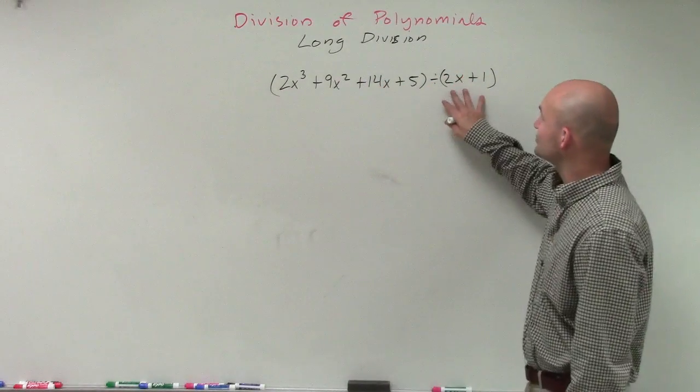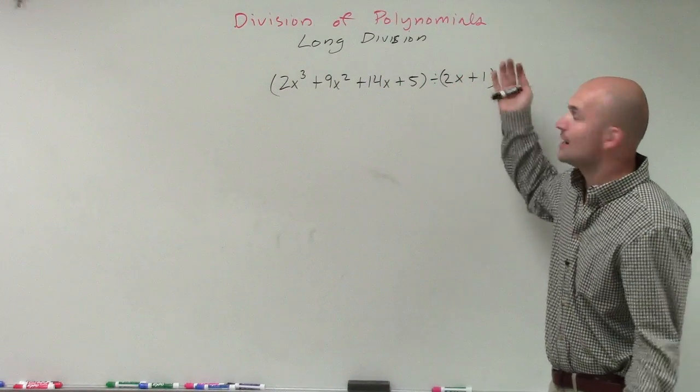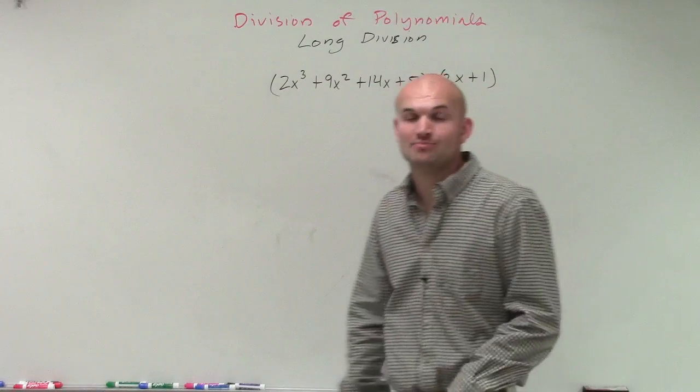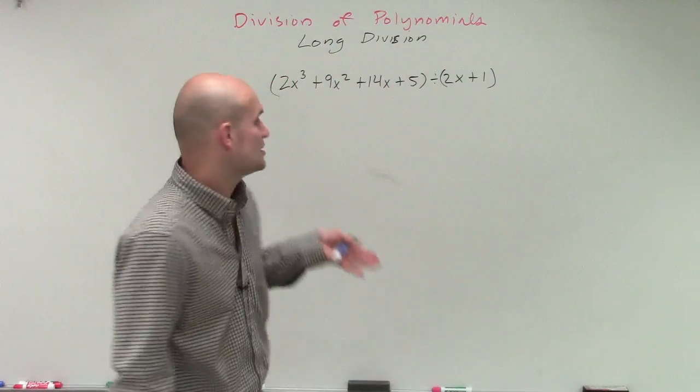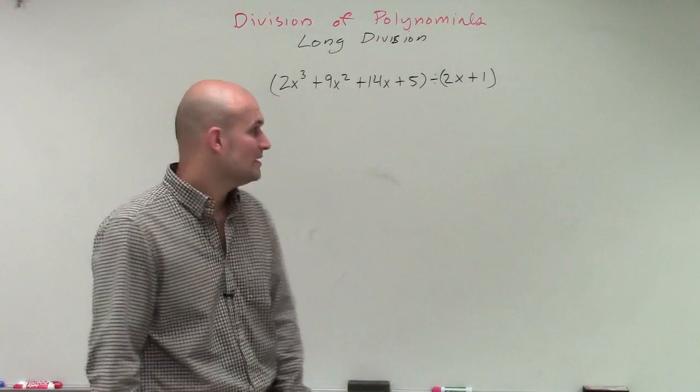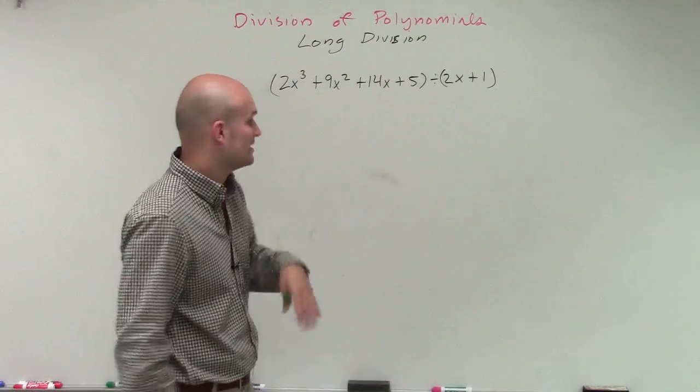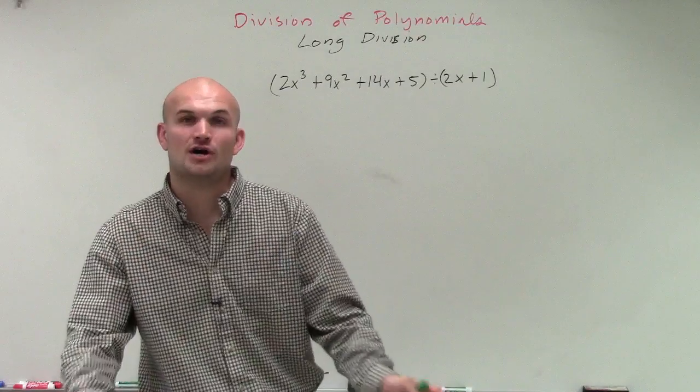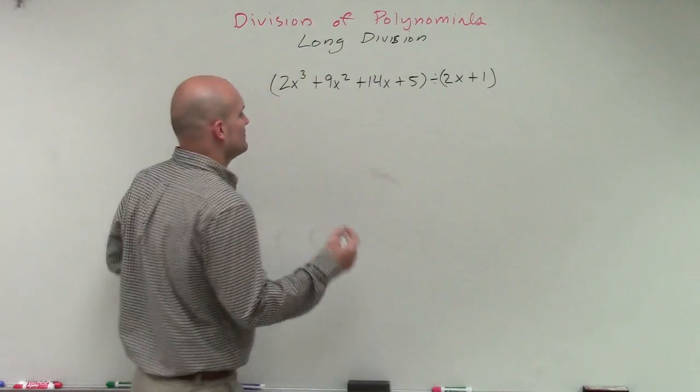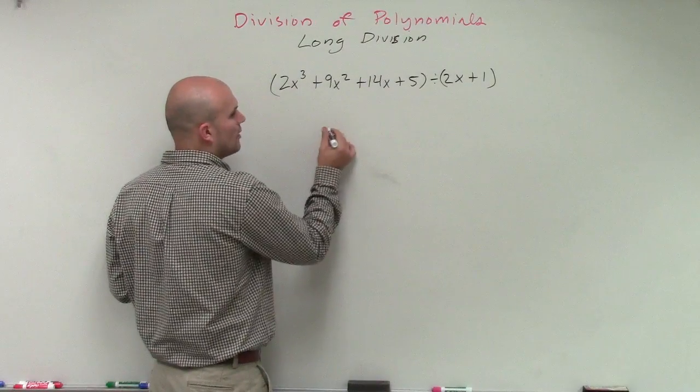So this problem is going to be a little bit different. As you can see, our divisor now is in the form of 2x plus 1. So our leading term is not just a variable by itself. We now have a coefficient with it. However, when applying the division algorithm, it's not really going to do too much of a difference. So let's go and take a look at how it will change it.